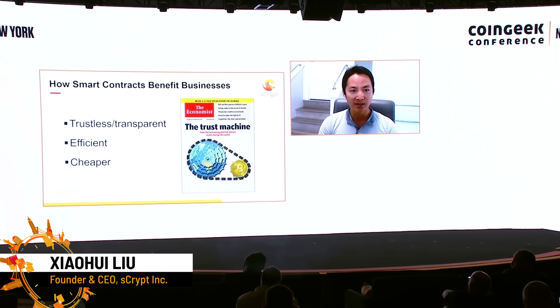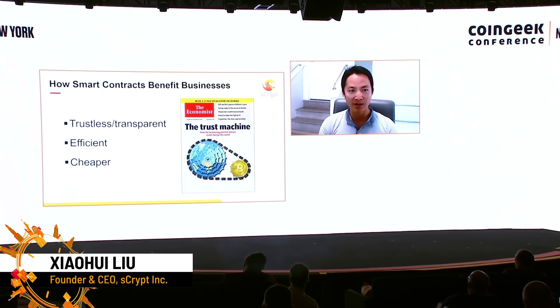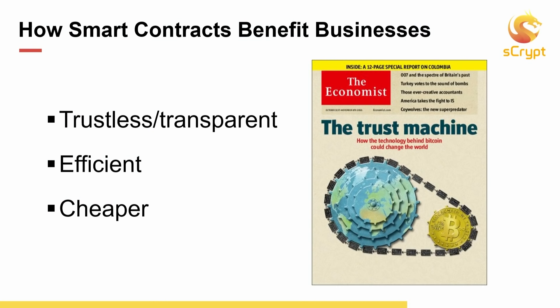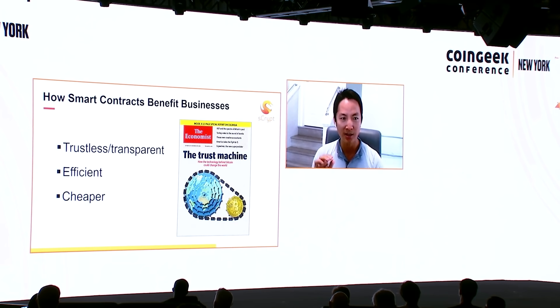Before I talk about what sCrypt does, I want to talk about the buzzword all around: so-called smart contracts. What are smart contracts? In my opinion, it's very simple. It's like any kind of computer code with only one exception — it runs not on your laptop or mobile phone, but on the Bitcoin network, run by all the miners in the entire Bitcoin network. So what is the benefit? Why is it different from all other code running somewhere else? Because it's running on the Bitcoin mining network, it has a few great features.